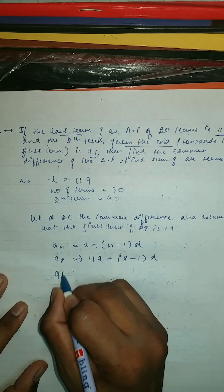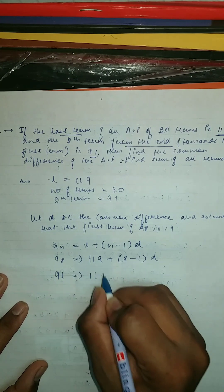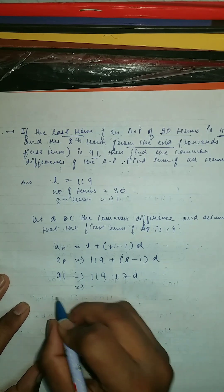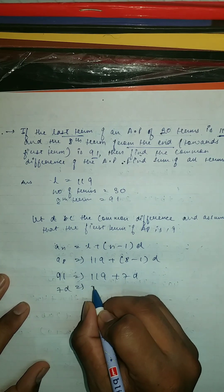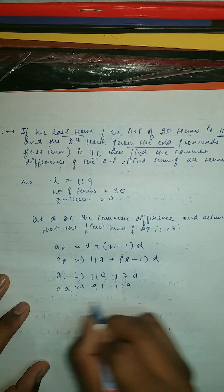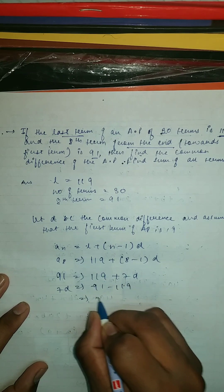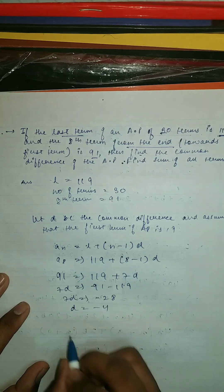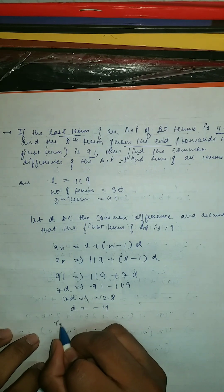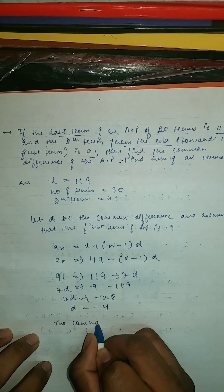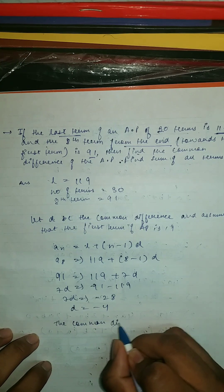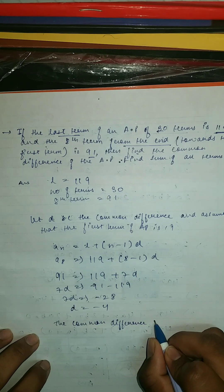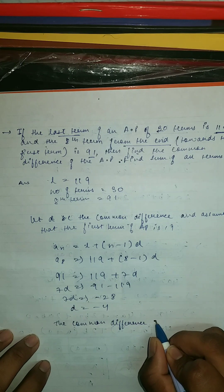Which is equal to 7D equal to 91 minus 119, equal to minus 28. So 7D equals minus 28.